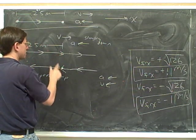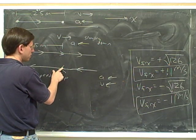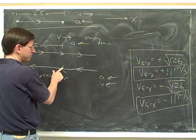First we passed the 25 meter mark going to the right and our speed was 11 meters per second. Then we passed the 25 meter mark going to the left and our speed was again 11 meters per second.